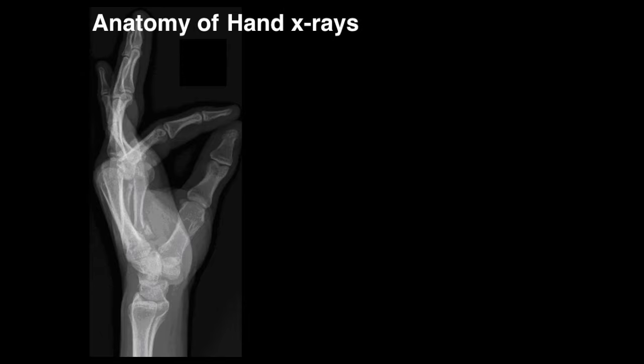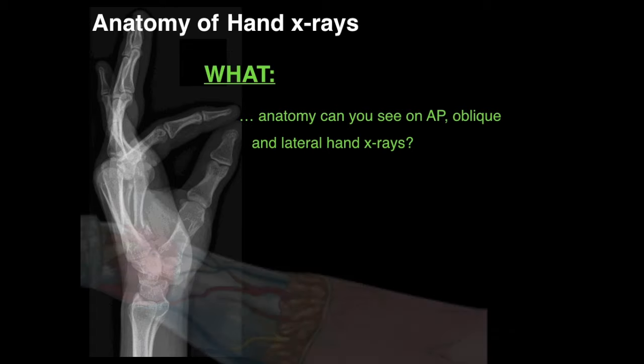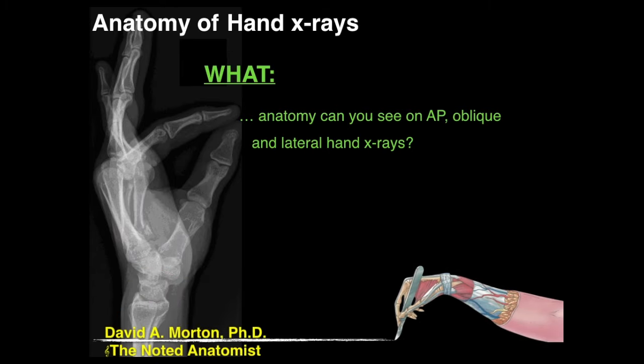We're going to talk about anatomy of hand x-rays and answer the question: what anatomy can you see on AP, oblique, and lateral hand x-rays? Hello everyone, my name is Dr. Morton and I'm the Noted Anatomist.